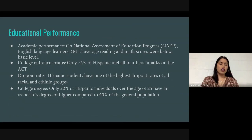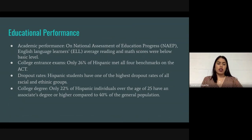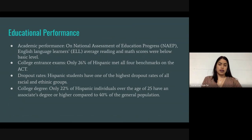Looking at educational performance on the National Assessment of Education Progress, also known as NAEP, English language learners' average reading and math scores were below basic level. For English language learners, the reading scores were 31% and math scores were 24%, while for white students the reading scores were 54% and math scores were 46%. For college entrance exams, only 26% of Hispanic students met benchmarks.